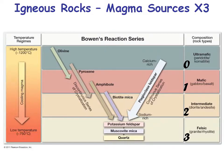Bowen's reaction series is the bread and butter of igneous petrology — the study of igneous rocks. This diagram puts it all together regarding the types of minerals found from different temperatures of magma. The highest temperature is at the top, lowest at the bottom, with partial melting occurring from the top down. If you partially melt peridotite, which has lots of olivine, you get basalt or gabbro, which has lots of pyroxene.